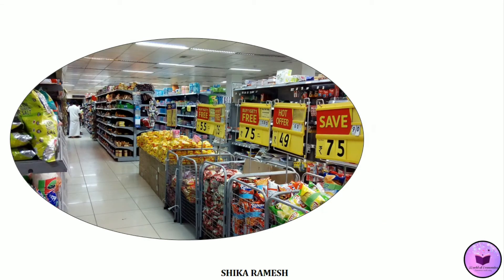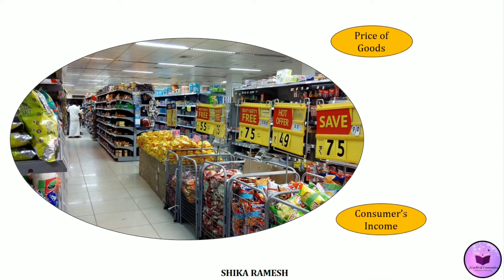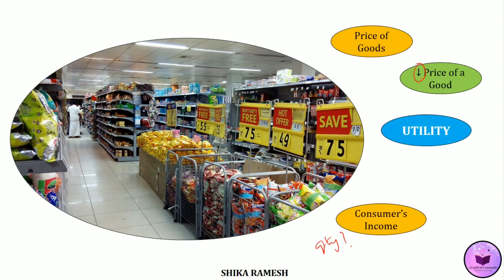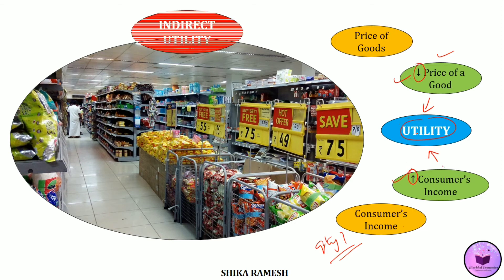For example, when we go to a supermarket, we usually look at the price of the goods as well as our income in order to purchase a particular good and determine how much quantity needs to be purchased. Suppose the consumer wants to purchase a particular product and sees that the price has currently decreased — he or she will be happy to purchase it. Similarly, when the consumer's income increases, the consumer will be happy to purchase a product in whatever quantity he wishes. The utility the consumer receives upon knowing that the price has decreased or his income has increased is known as indirect utility.